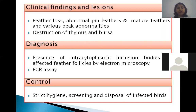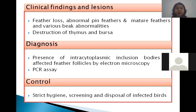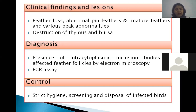Coming to the clinical findings and lesions — important findings are feather loss and abnormal pin and mature feathers. Pin feathers are the developing feathers. This disease also causes destruction of the thymus and bursa and is responsible for immunosuppression. The disease can be diagnosed by the presence of intracytoplasmic inclusion bodies in affected feather follicles, which can be seen by electron microscopy. PCR can also be done for diagnosis. For control, strict hygienic conditions are required, and screening and disposal of infected birds is done.